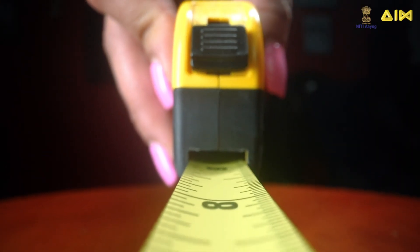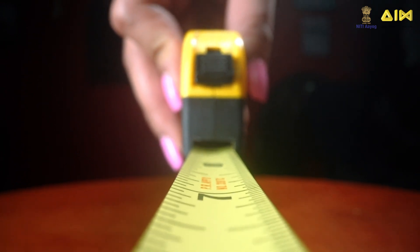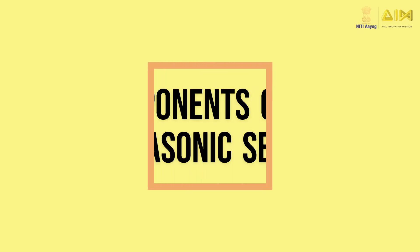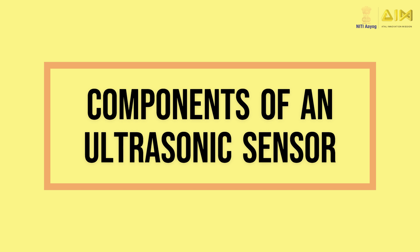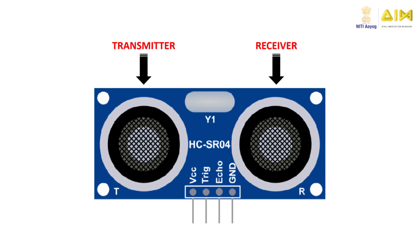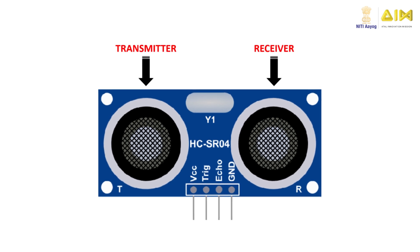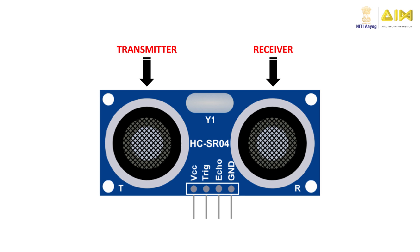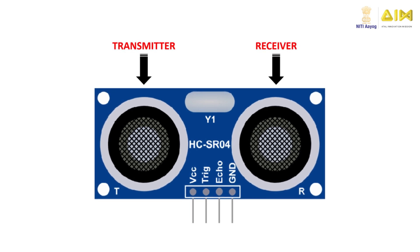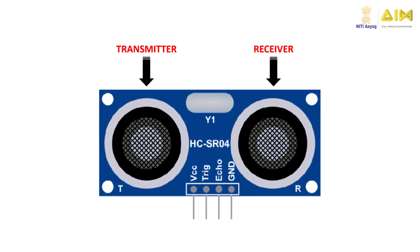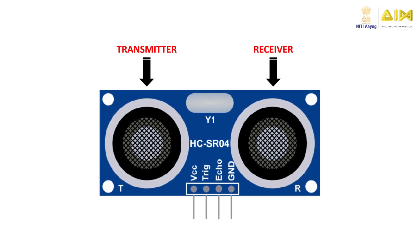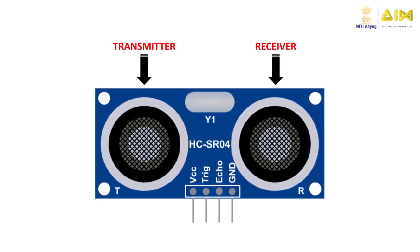How does this device use ultrasonic sound waves to measure distance? For this we need to understand the components of an ultrasonic sensor. The two main components are the transmitter and the receiver. The transmitter uses piezoelectric crystals to generate ultrasonic waves, while the receiver receives the reflected sound waves after they travel to and from an object.